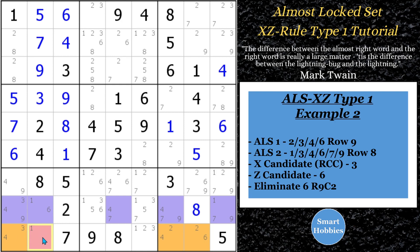The 3s see each other, so we can make an elimination right here — we can eliminate that 6. This is an ALS XZ rule elimination and it's a valid one. If you don't understand why, try plugging a 6 in here and you'll see how the puzzle will break — because the 3 has to be in one of these two spots, and by putting a 6 right here, you take out the 6s from these two spots, and then you don't have enough candidates to make these into locked sets. Hopefully that clears it up. Let's move on to our third example.